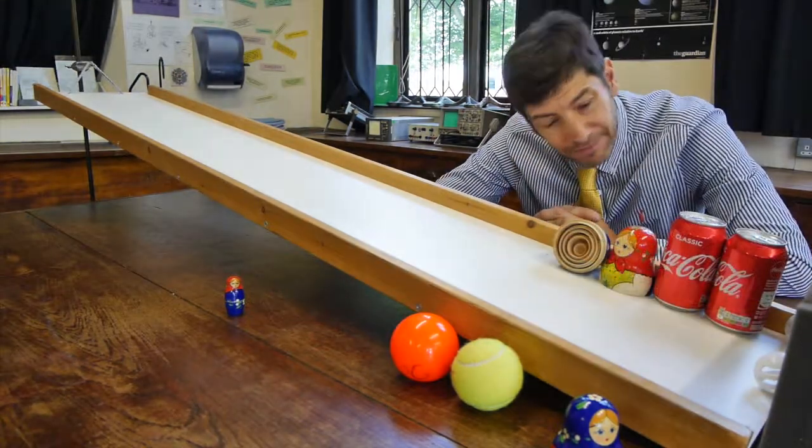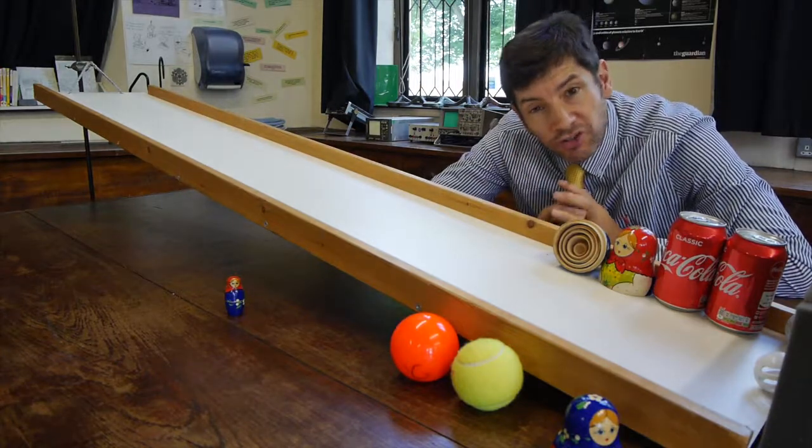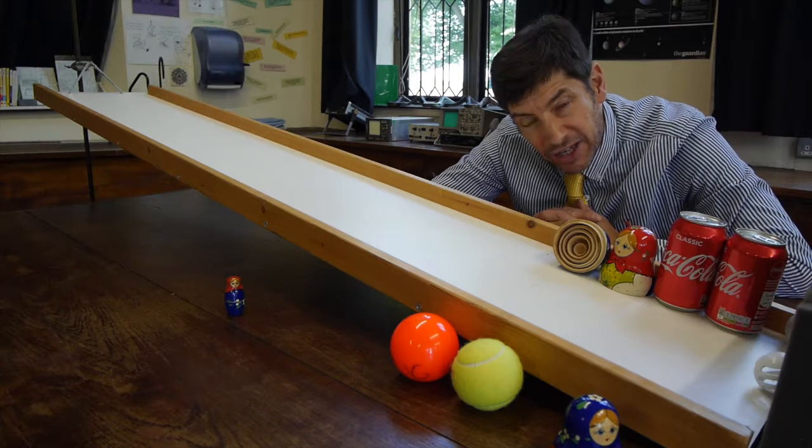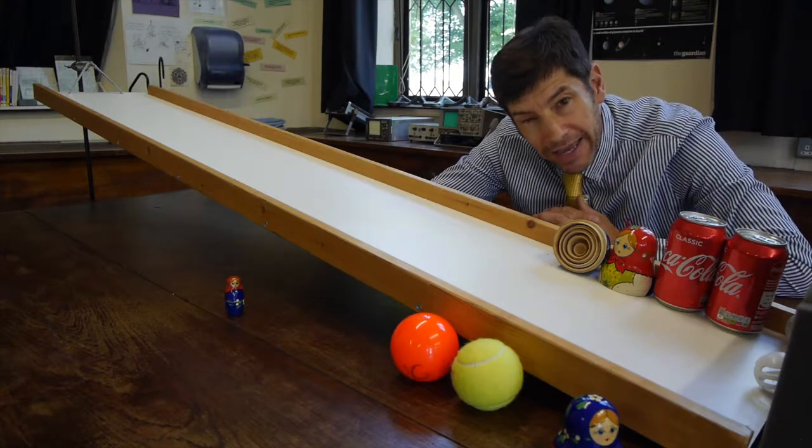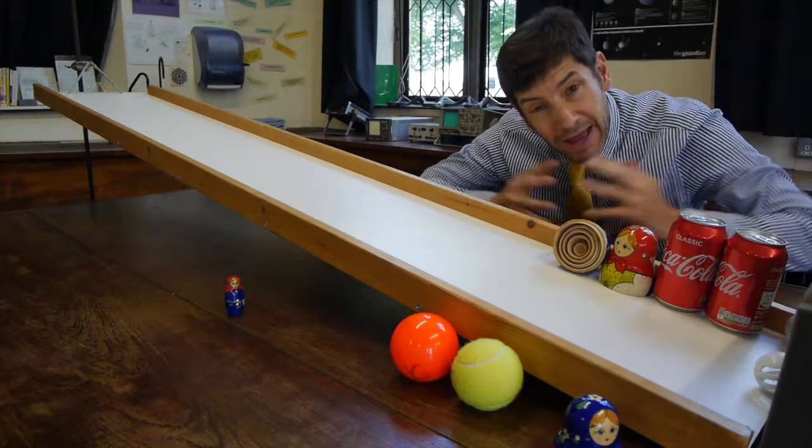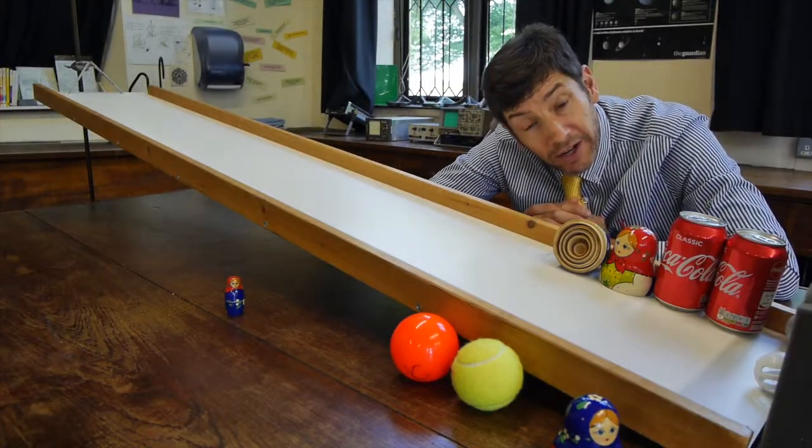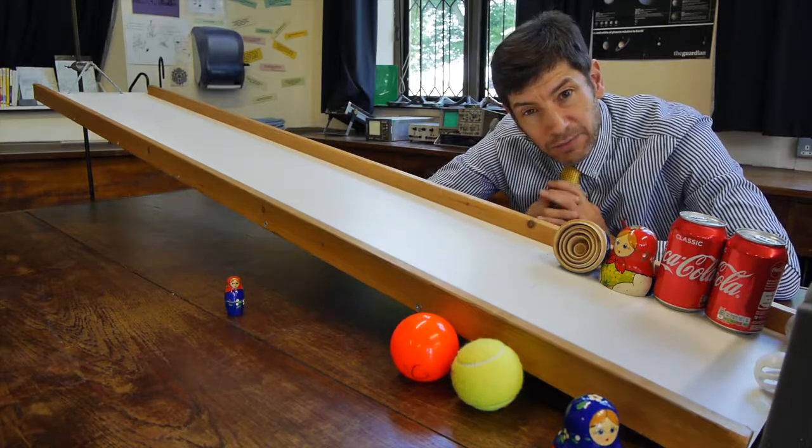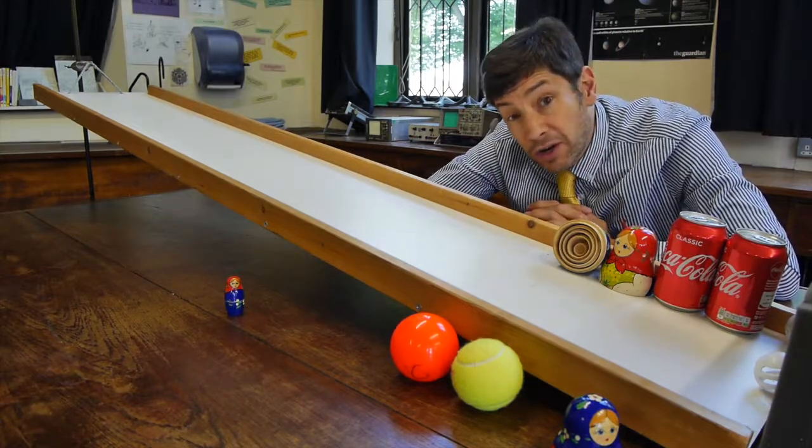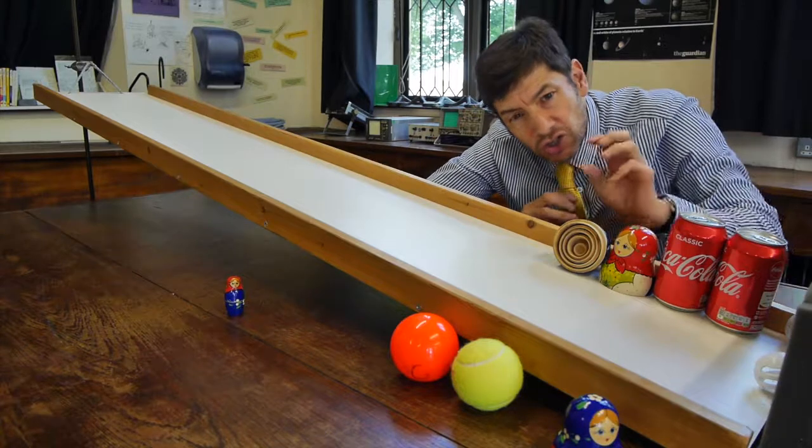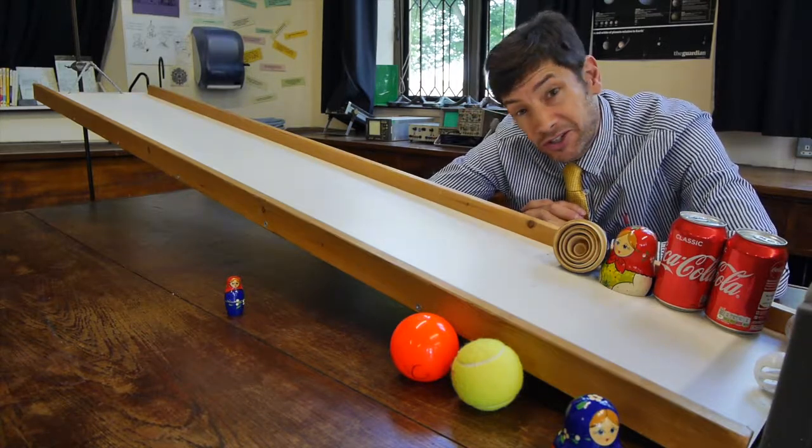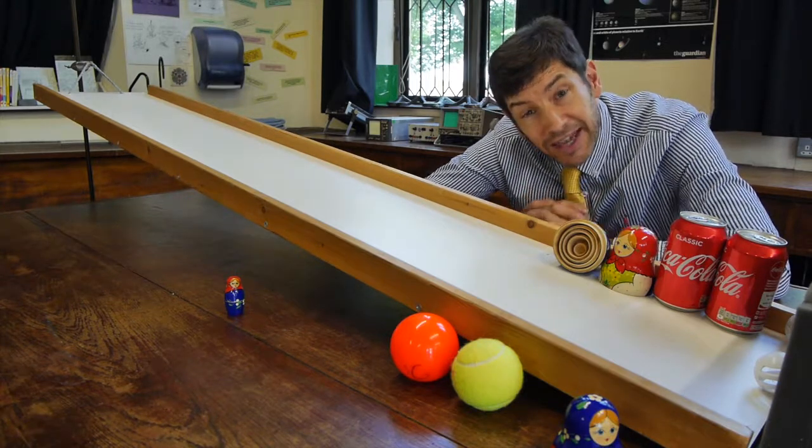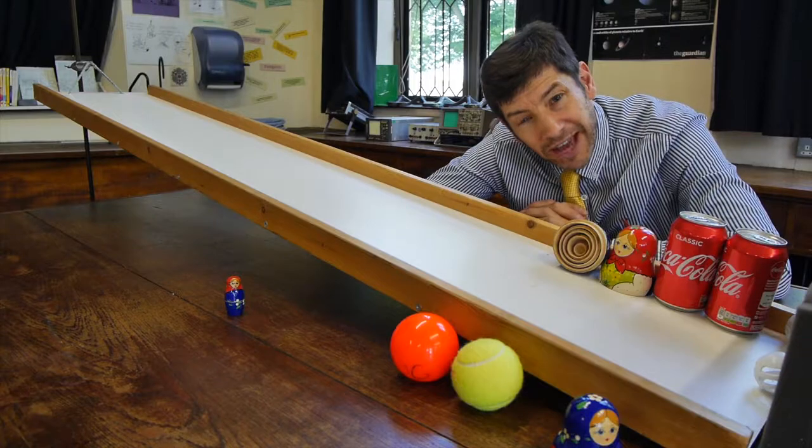So finally, the hollow ball with its mass all concentrated in the outside edge has to use a great deal of its gravitational potential energy to convert into angular momentum. And because the mass is very spread out—in other words, it's right on the outside edge of the object—it needs quite a lot of angular momentum to get it to rotate at any speed. Whereas the solid ball has its mass concentrated more towards the center, therefore uses less of its gravitational potential energy to get it up to speed, to give it angular momentum and to get it to go down the slope.